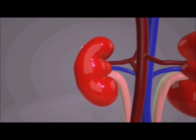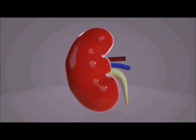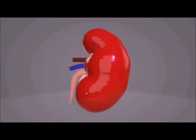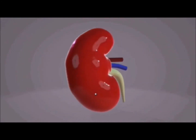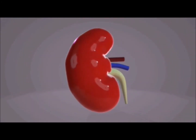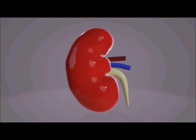The kidneys are located in the abdominal cavity, near to our spine. Each kidney is the size of a large fist — about four or five inches long. These bean-shaped structures are surrounded by a tough fiber tissue called the renal capsule.